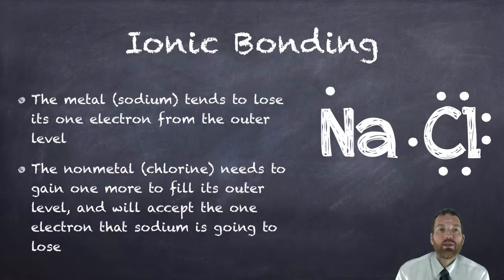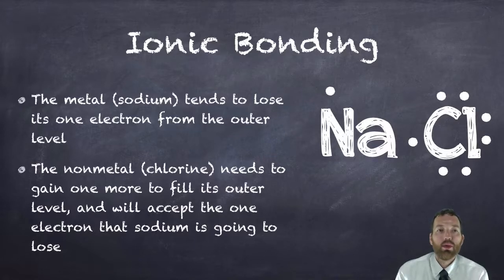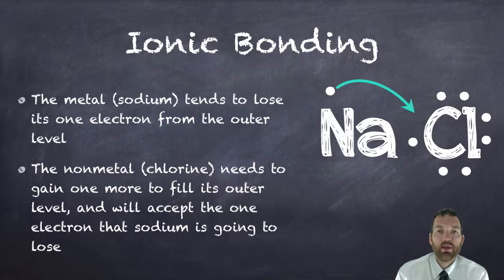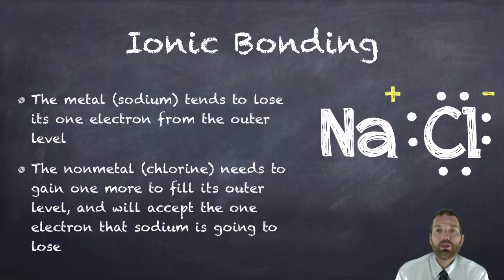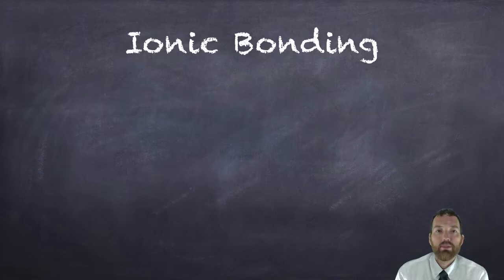In this example, sodium has one valence electron and chlorine has seven valence electrons. Sodium, being a metal, is going to lose its one electron from its outer level, and chlorine, being a nonmetal, is going to gain one electron to fill its outer level. Chlorine has a free spot and takes up that electron. Now sodium has no valence electrons — it achieves a plus one charge and becomes a cation, and chlorine achieves a minus one charge as an anion. These opposite charges hold them together in the ionic bond, like little magnets.